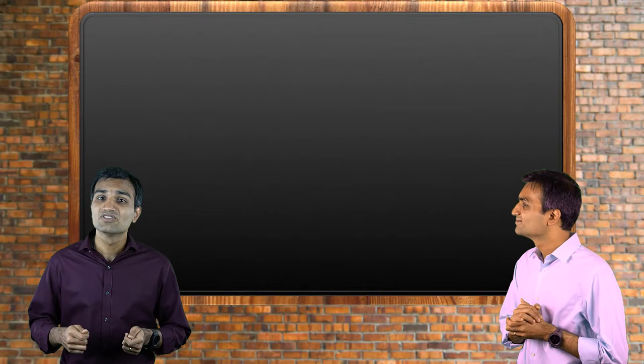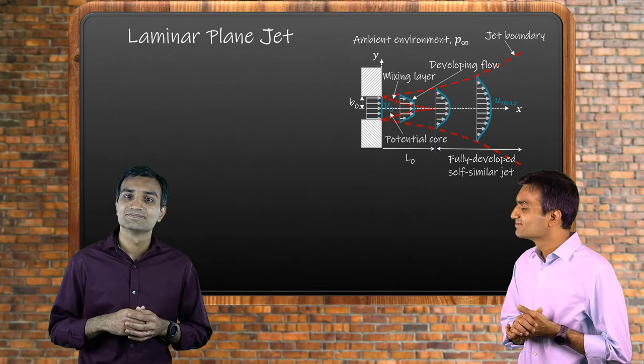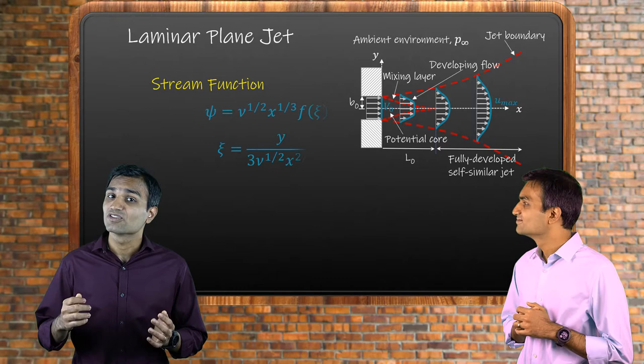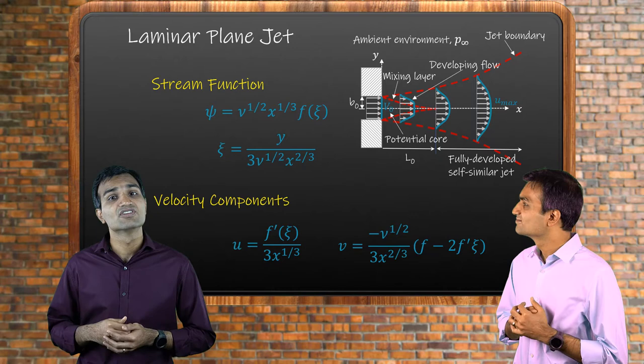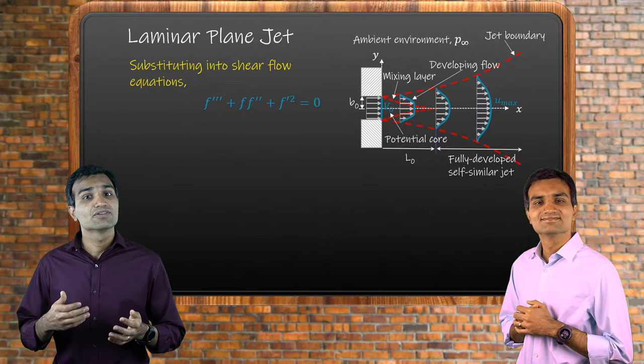Similar to the Blasius approach in laminar boundary layers, we use the similarity solution to solve for the velocity profile of the laminar plane jet. Hermann Schlichting proposed the following similarity variables for the stream function. The corresponding velocity components are given by u and v. These variables help us reduce the second-order partial differential equation in two variables to a third-order ordinary differential equation in just one variable.